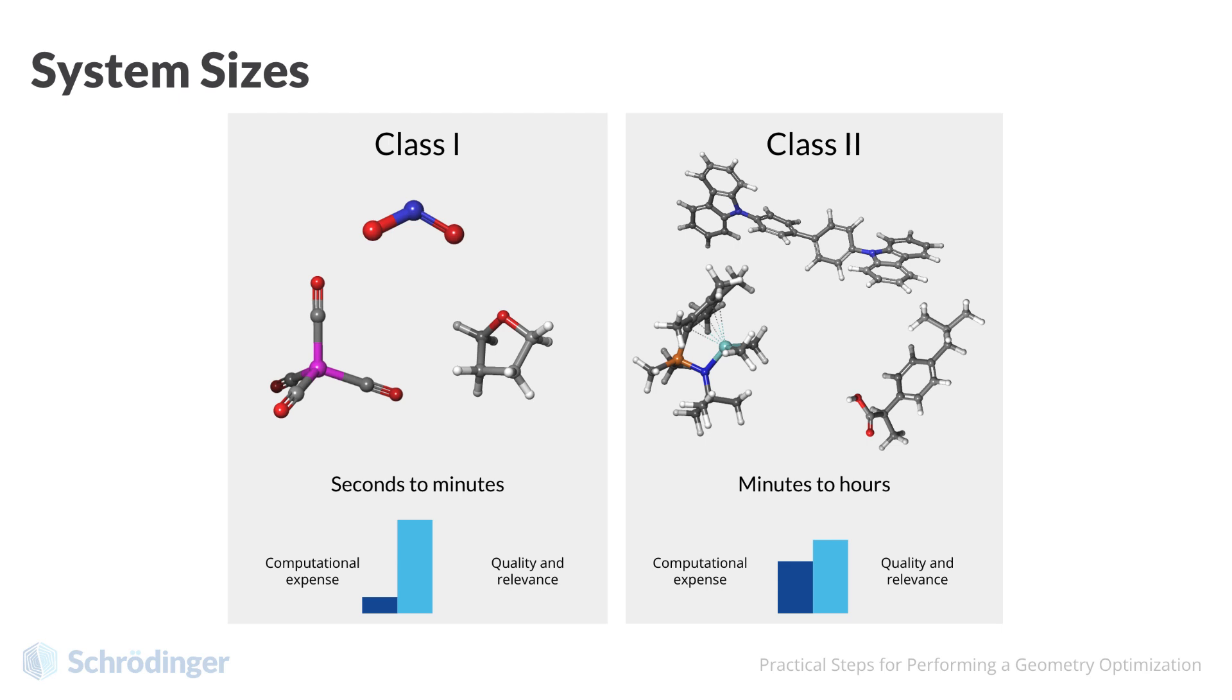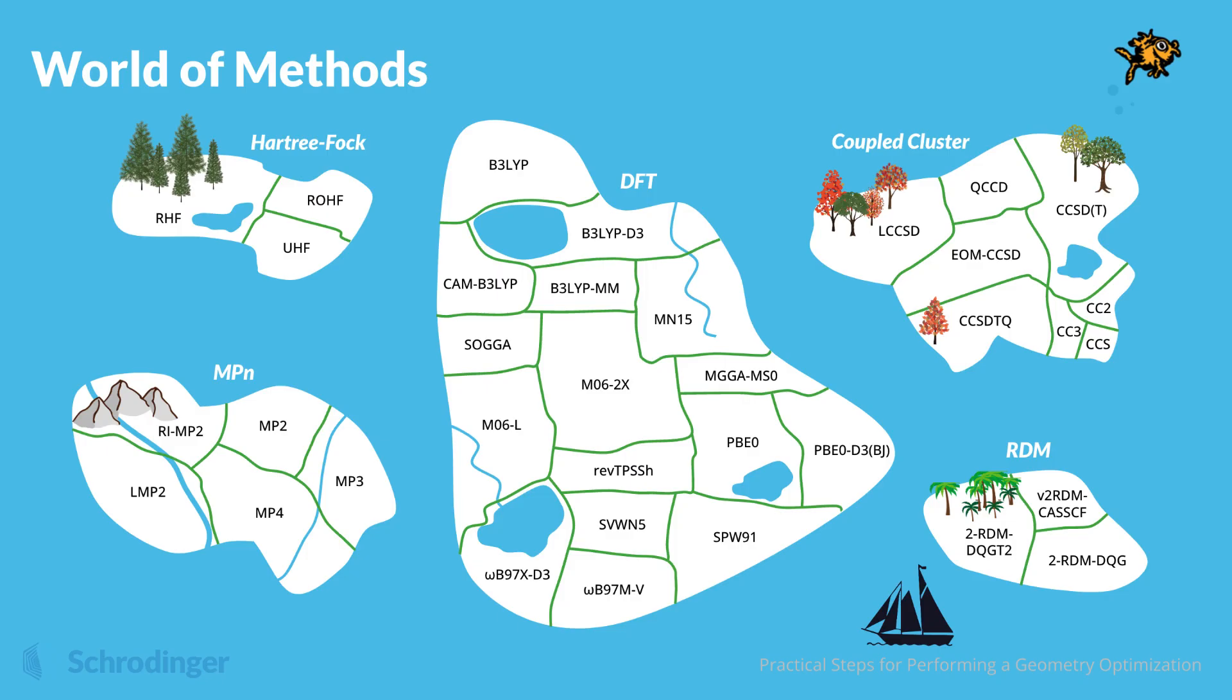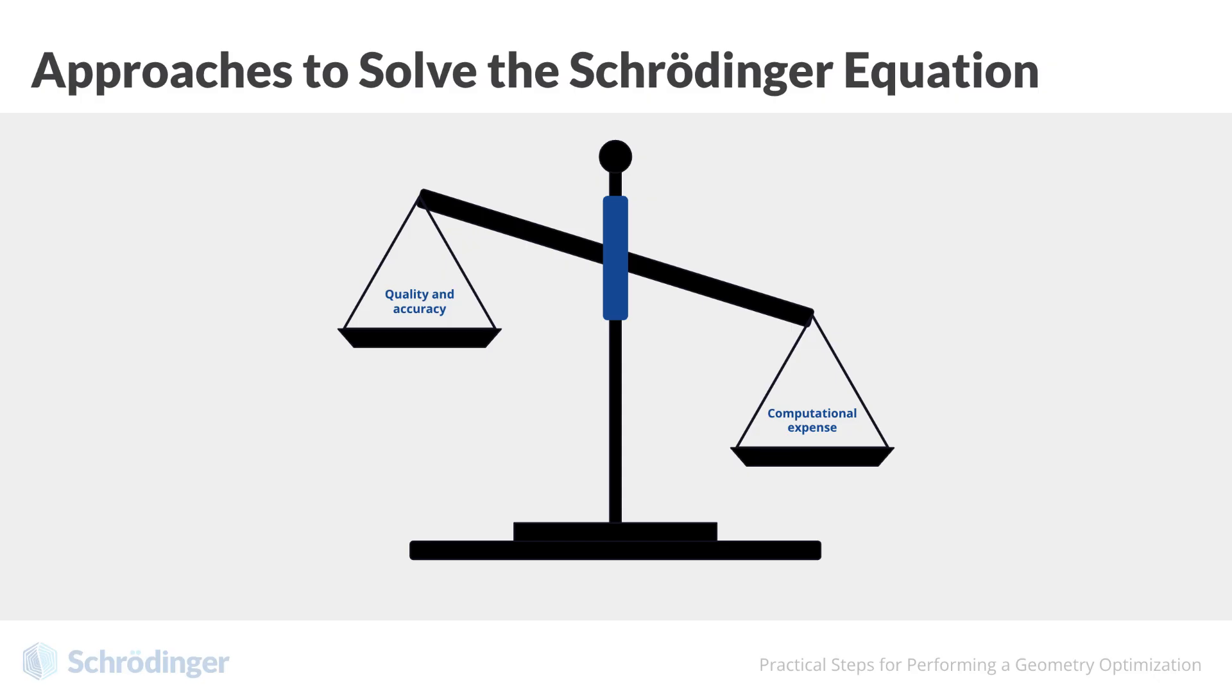Recall that there are many methods for solving the Schrödinger equation. We will need to choose a method for performing a geometry optimization. It is remarkable that the field of quantum chemistry can be boiled down to choosing an appropriate numerical method of solving the Schrödinger equation for the electrons. We wish to solve the Schrödinger equation to balance computational expense and quality.